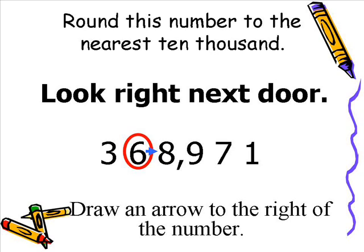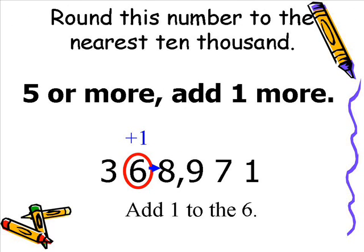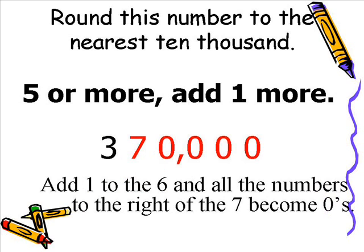There's an arrow going from the 6 to the 8. The next line of the point says 4 or less, just ignore. Well, 8 is larger than 4, so we go to the next line: 5 or more, add 1 more. So we're going to add 1 to the 6 — the number that is circled. By adding 1 to the 6, the 6 becomes a 7, and all the numbers to the right of the 7 become 0s, as you can see in this picture.